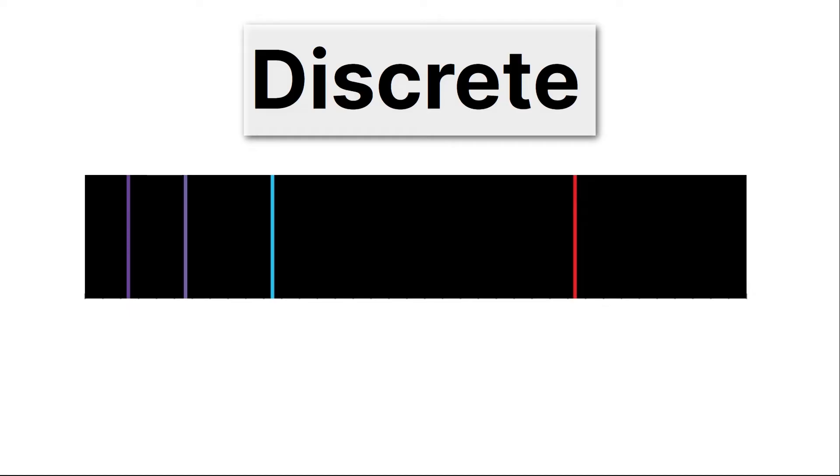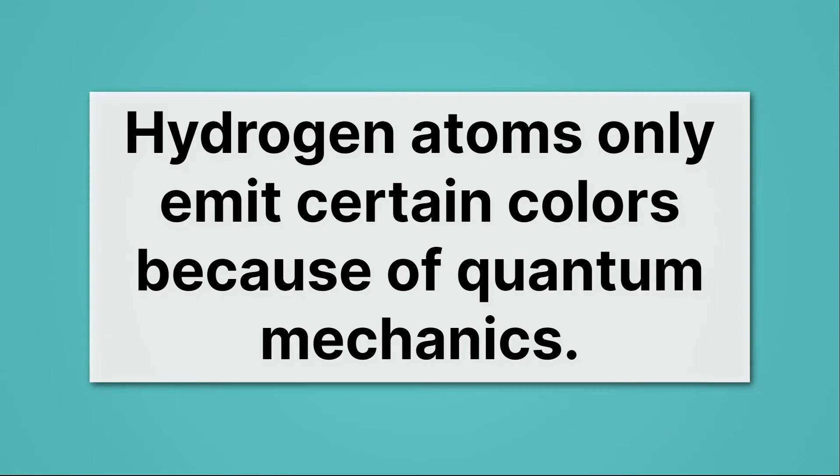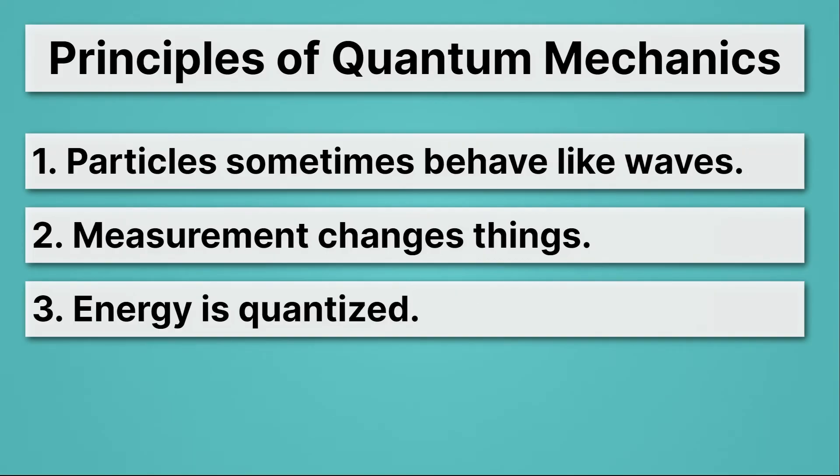Well, there's no surprise that this discrete spectrum of light is actually connected to quantum mechanics. This is the light from hydrogen atoms. So if we give hydrogen atoms energy, they'll emit light, but they won't emit all light. They'll emit red and teal and purple. That's kind of strange. Hydrogen atoms only emit certain colors because of quantum mechanics, because their energy is quantized.